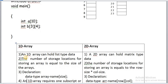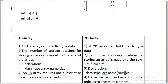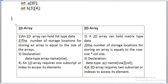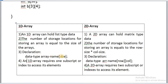The number of storage locations for a 1D array is equal to the size of the array — here we get 10 locations. For a 2D array, the number of storage locations equals row size multiplied by column size — here 3 into 4, giving a total of 12 locations.